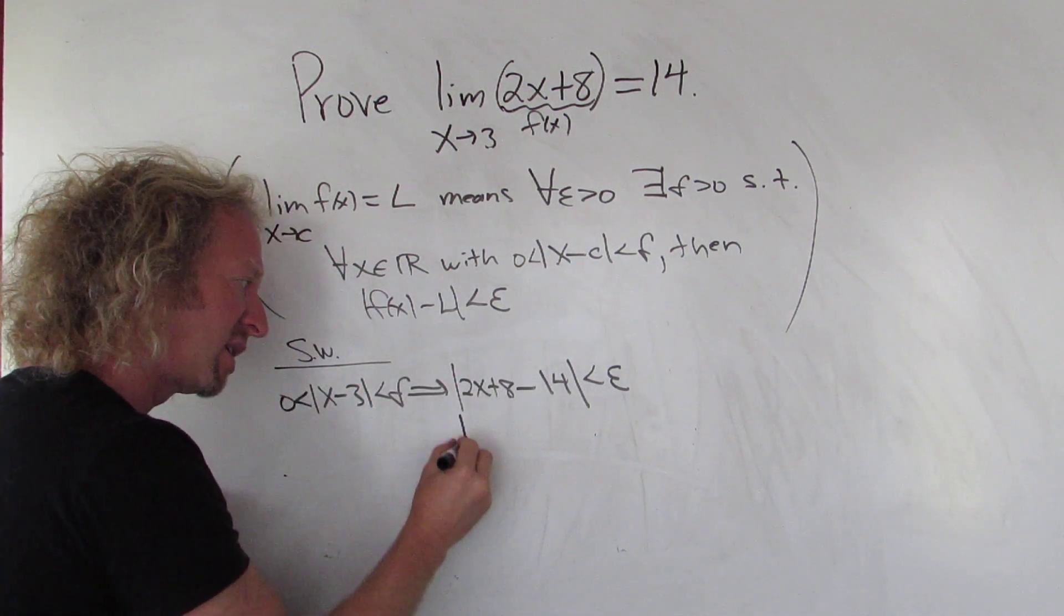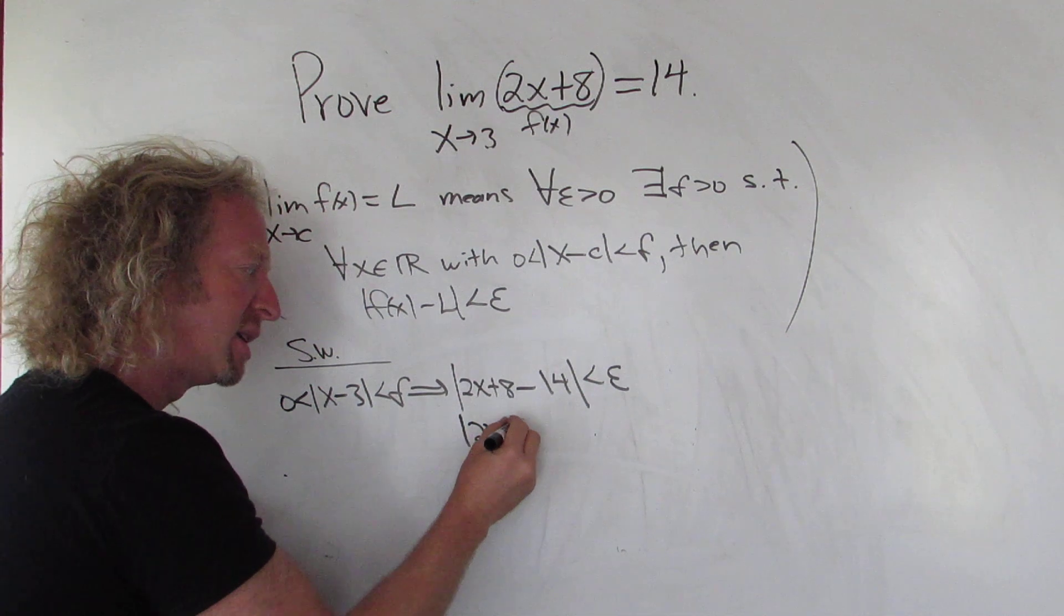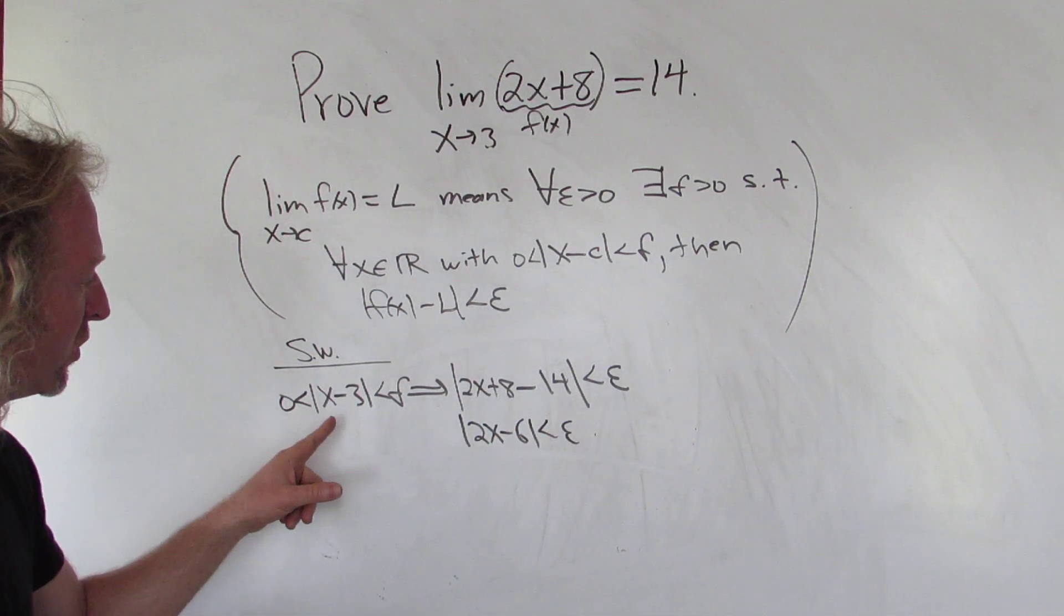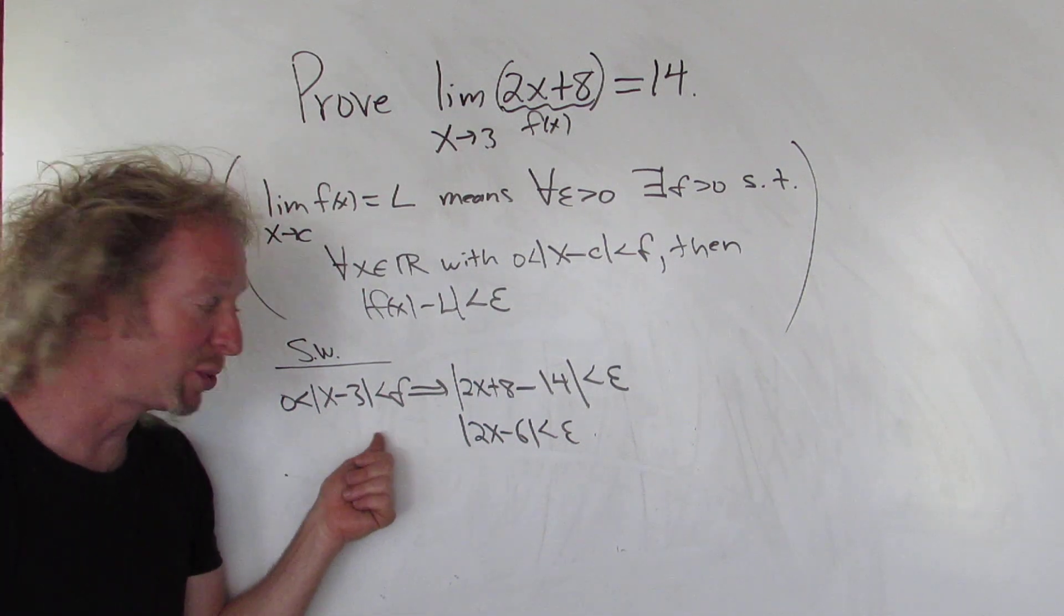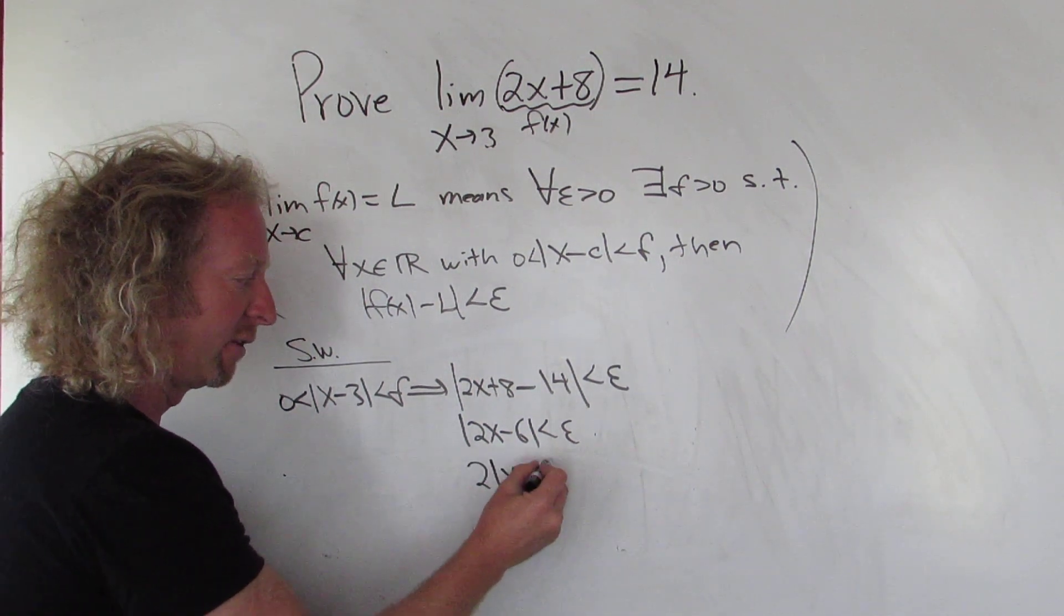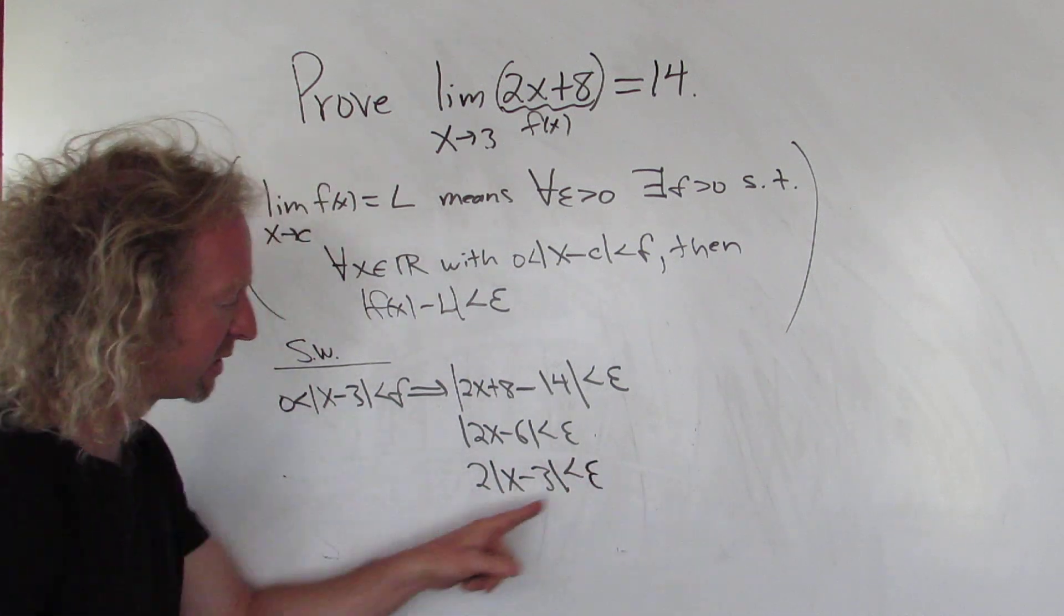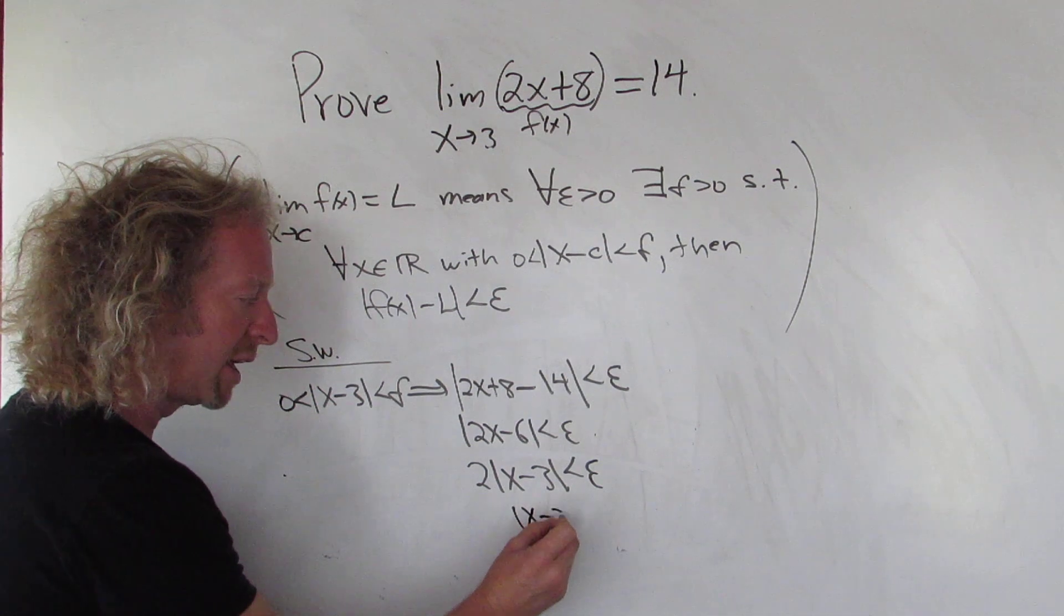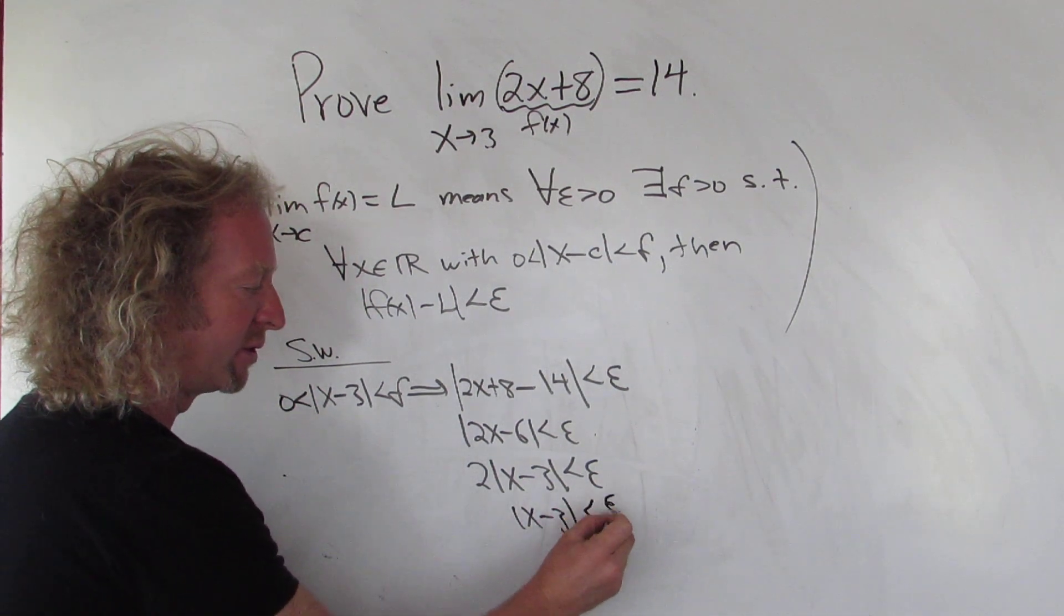So 8 minus 14 is negative 6, so you get 2x minus 6, then less than epsilon. So now you want to make this look like this. I guess we can pull out 2, right? Because I haven't done this yet, so it's kind of fun. Yes, yes, now to make it match, you can divide by 2. So you get x minus 3 less than epsilon over 2.